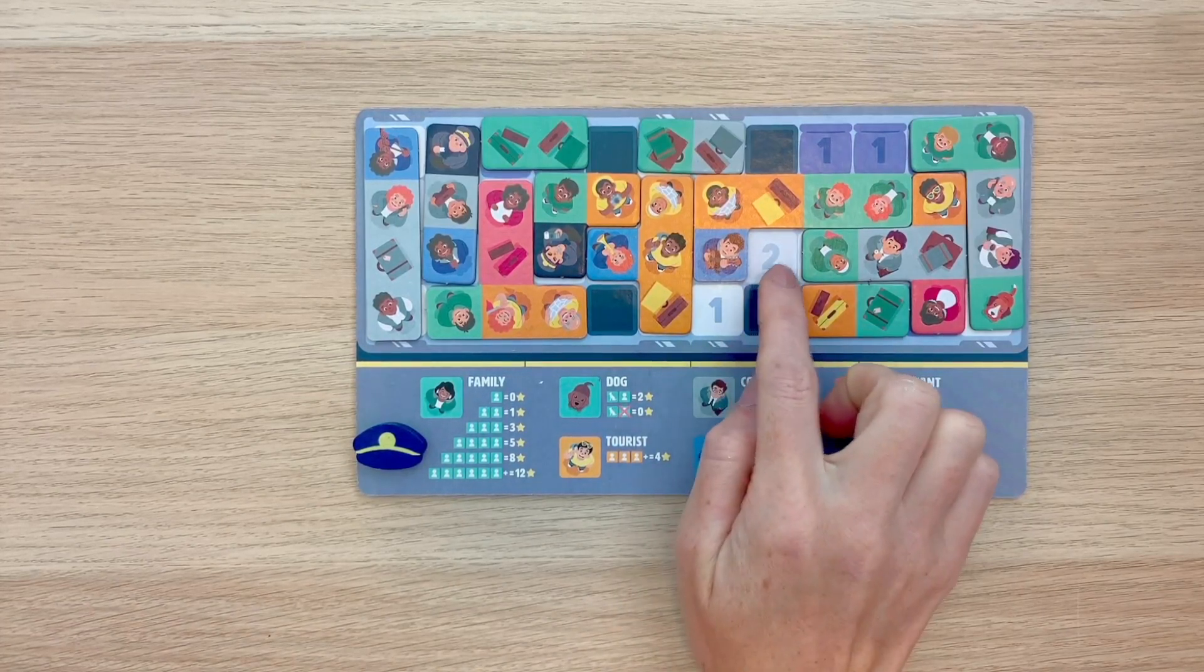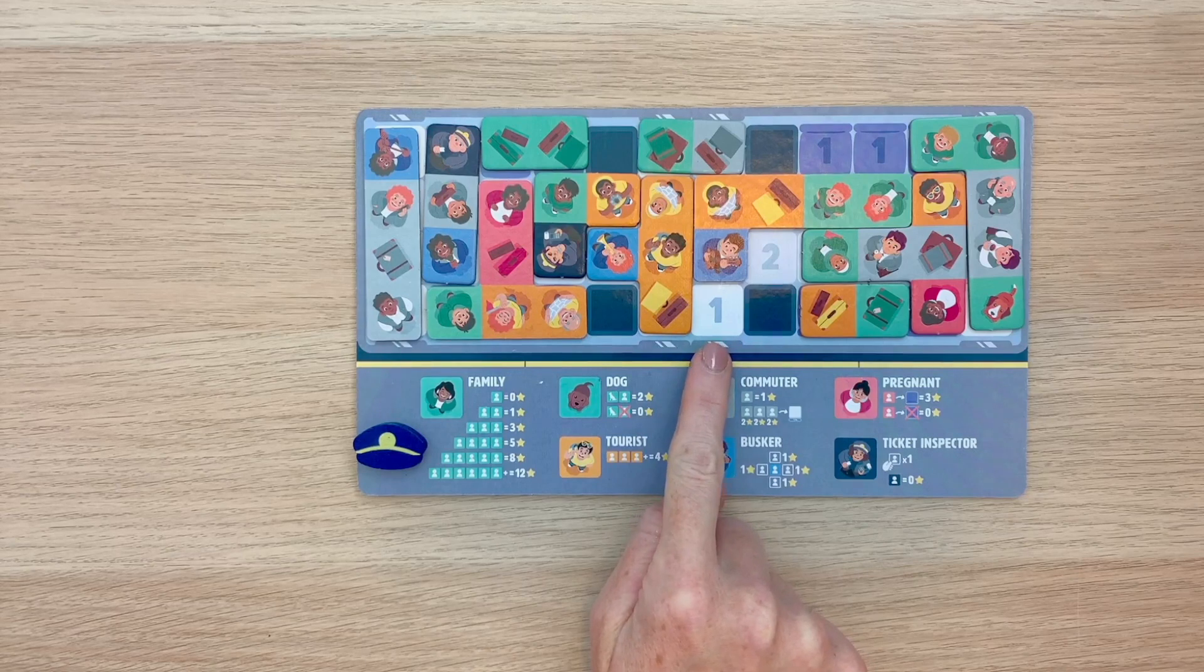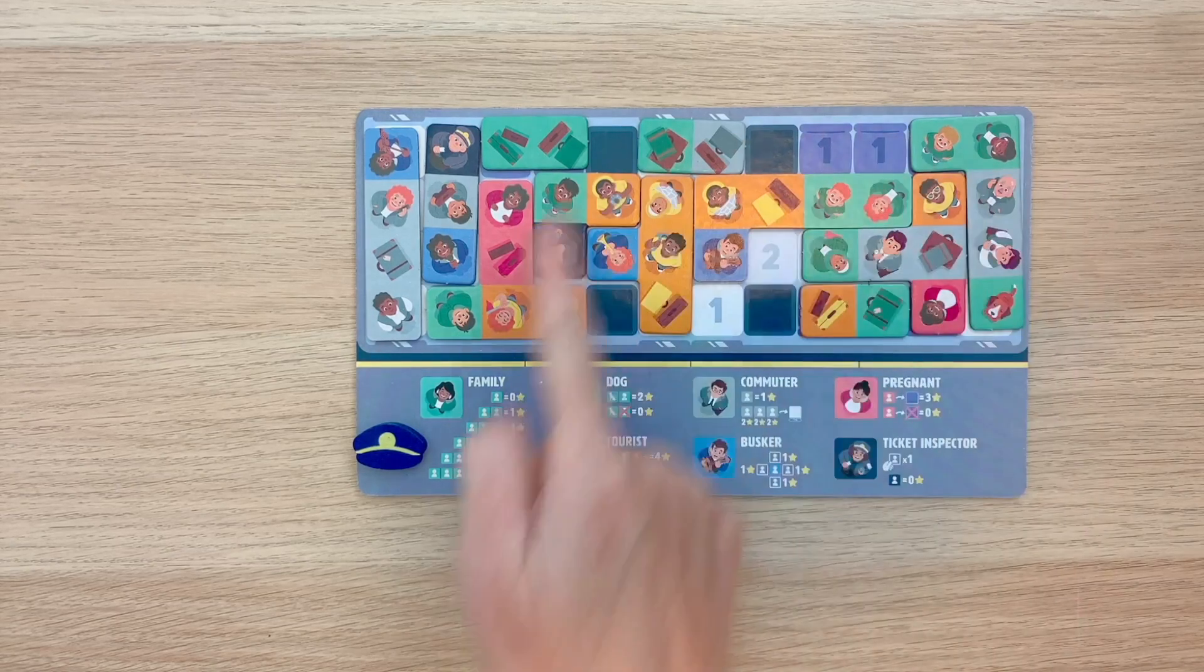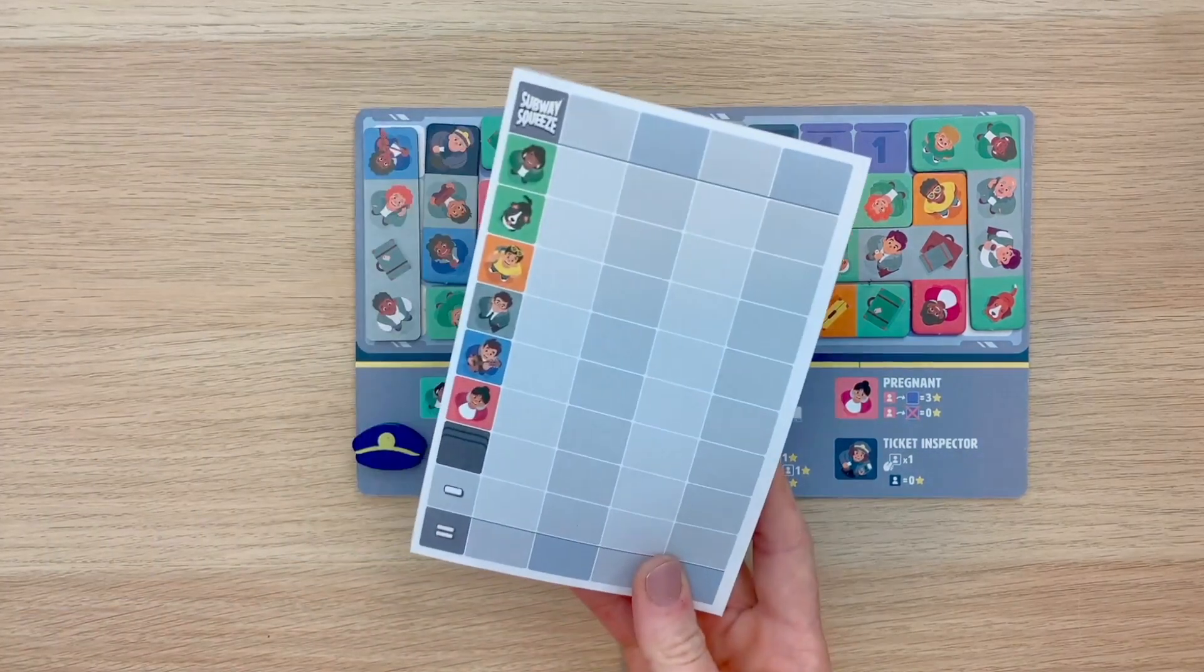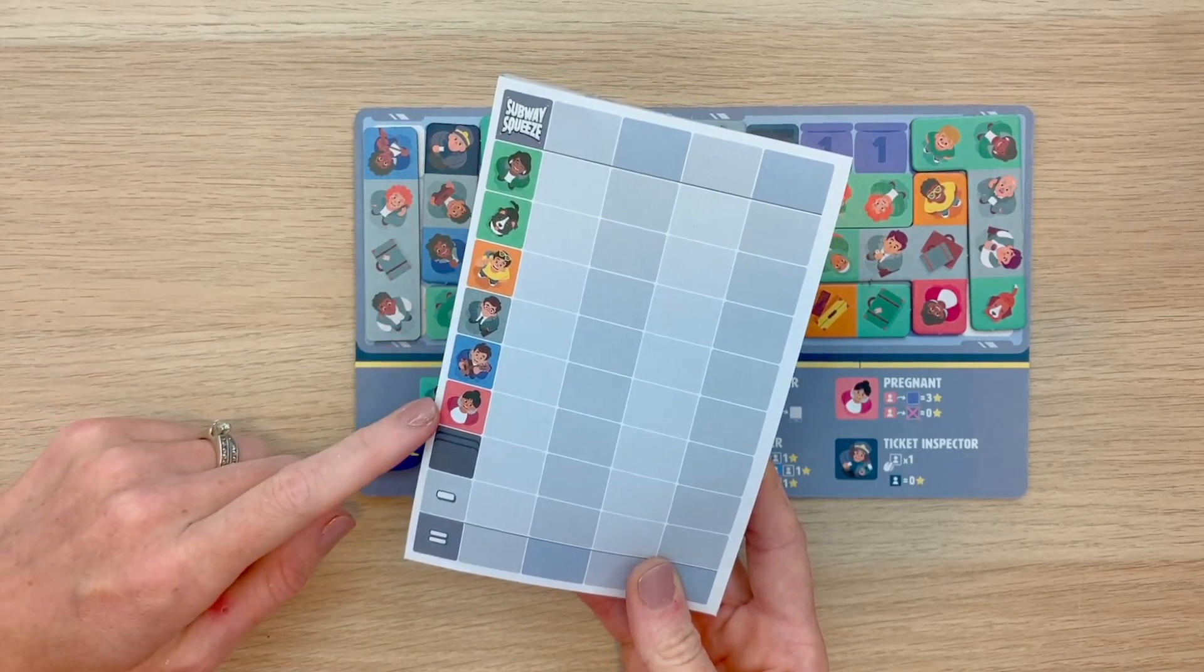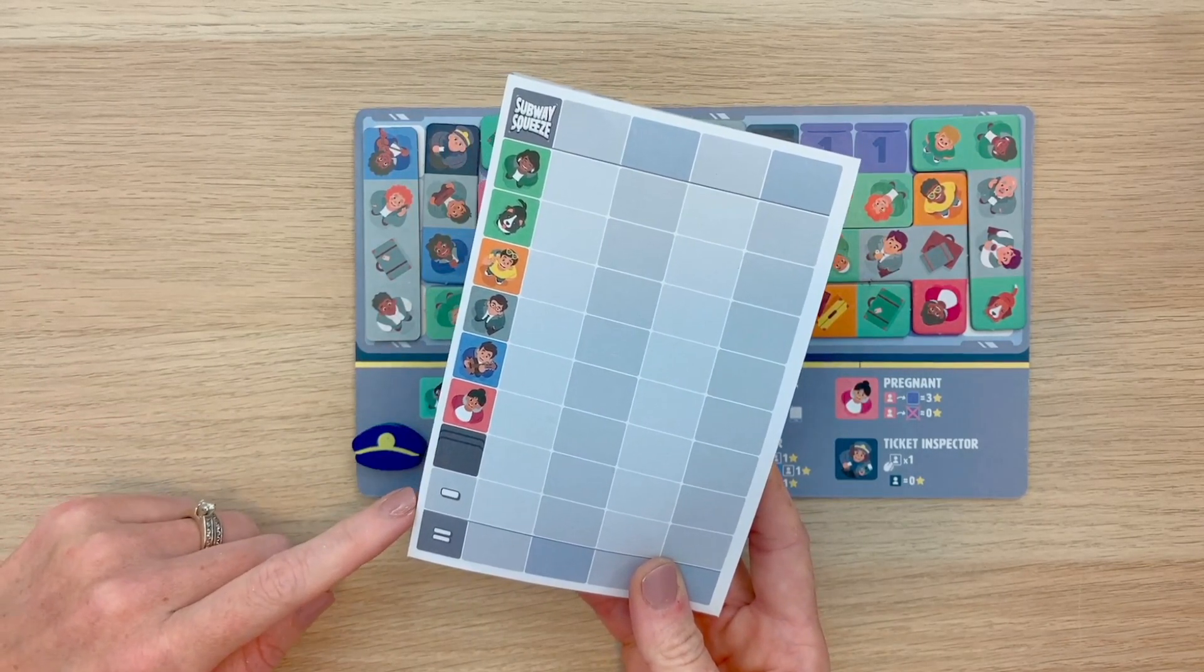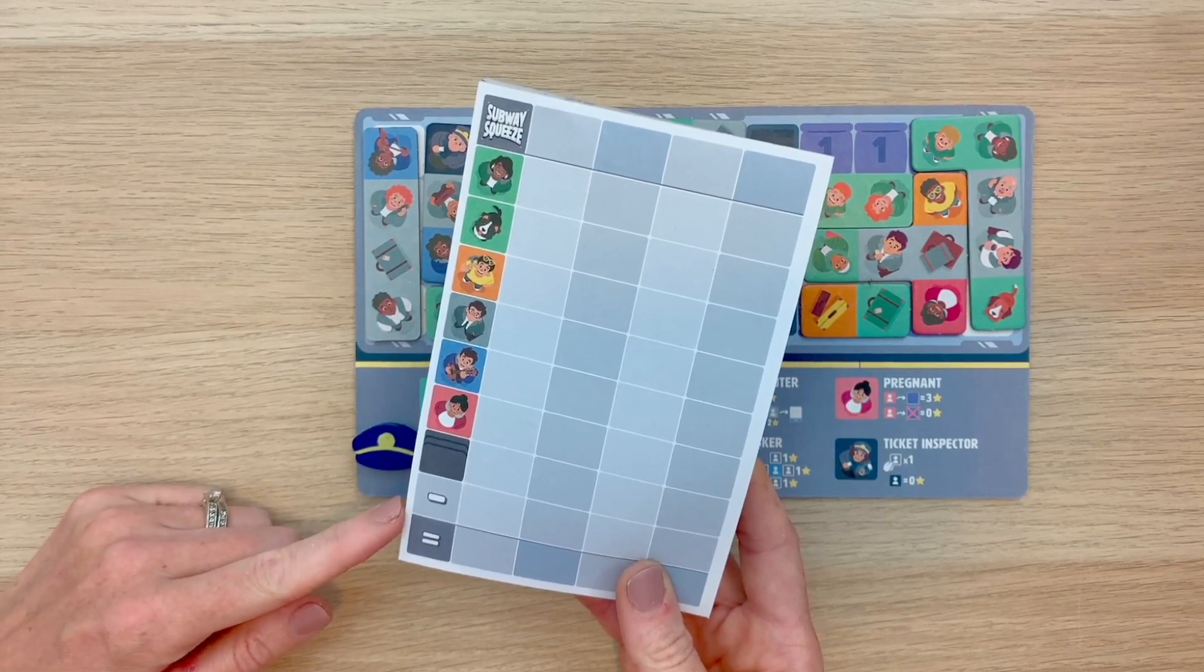Now any gaps you have at the end of the game are going to be negative points based on the numerical value that is showing. So for this example, I would have negative five points. When it comes time to score, you can use the included score pad that comes with the game, adding up all of your different collections of passengers, minusing those empty spaces, and determine who was able to subway squeeze the best.